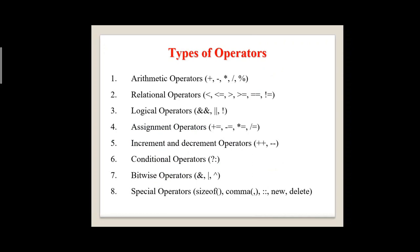The sixth one is conditional operators. The conditional operator is similar to an if-else statement. If the condition is true, the true block is executed; if false, the false block is executed. The seventh one is bitwise operators: bitwise AND, bitwise OR, bitwise XOR. These operators work on bits and perform bit by bit operations. The eighth one is special operators: sizeof, comma, scope resolution (double colon), and new and delete operators.